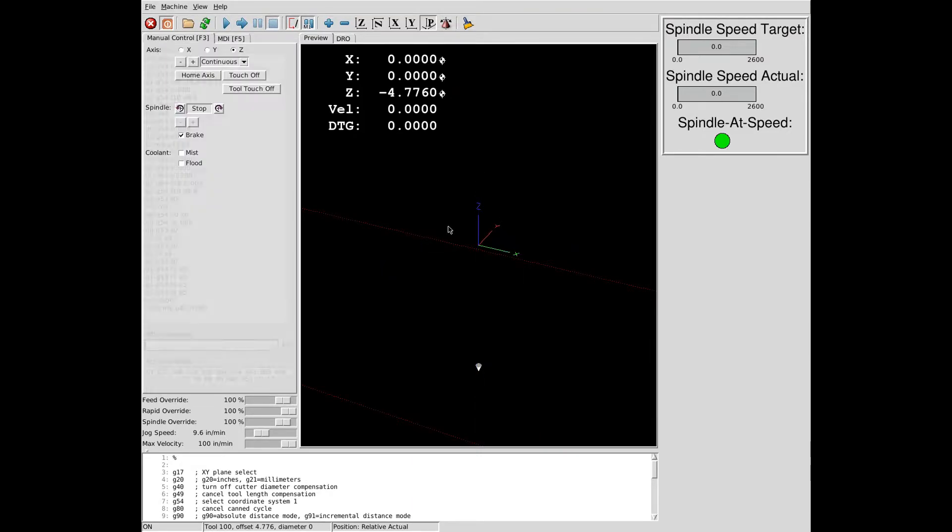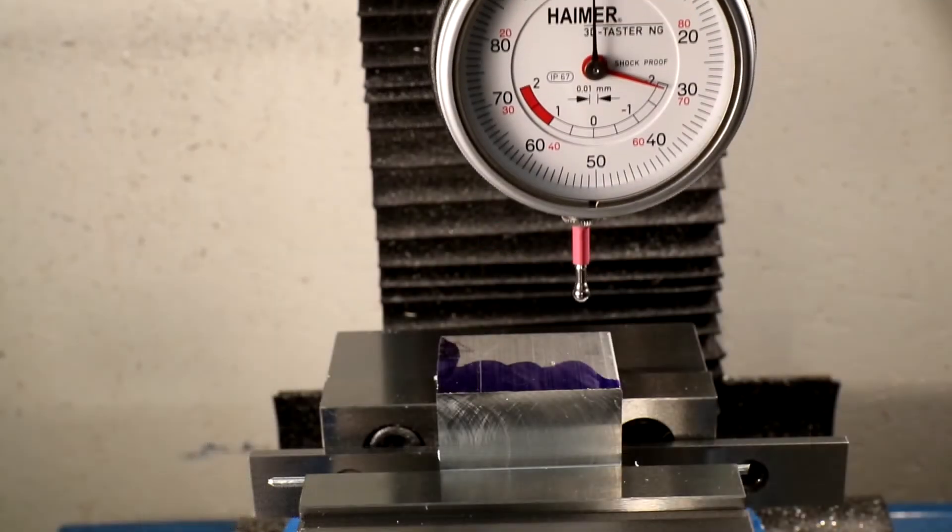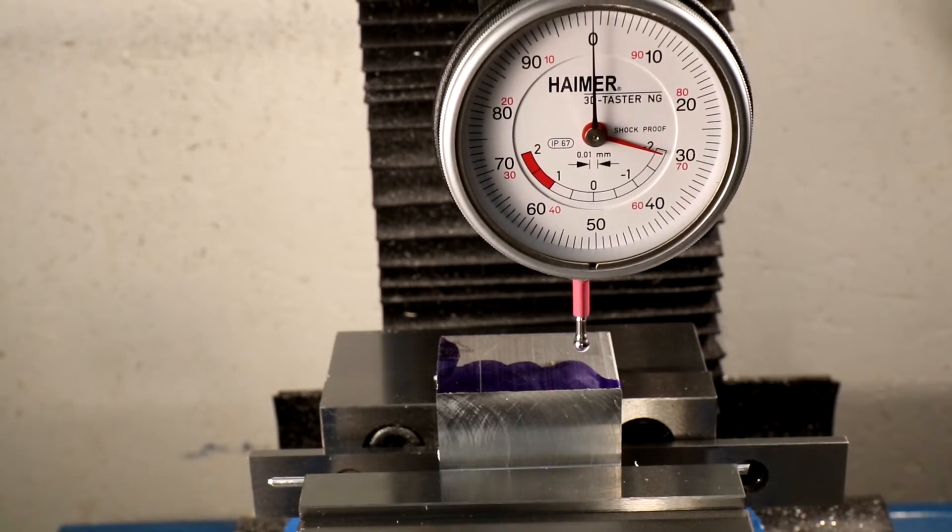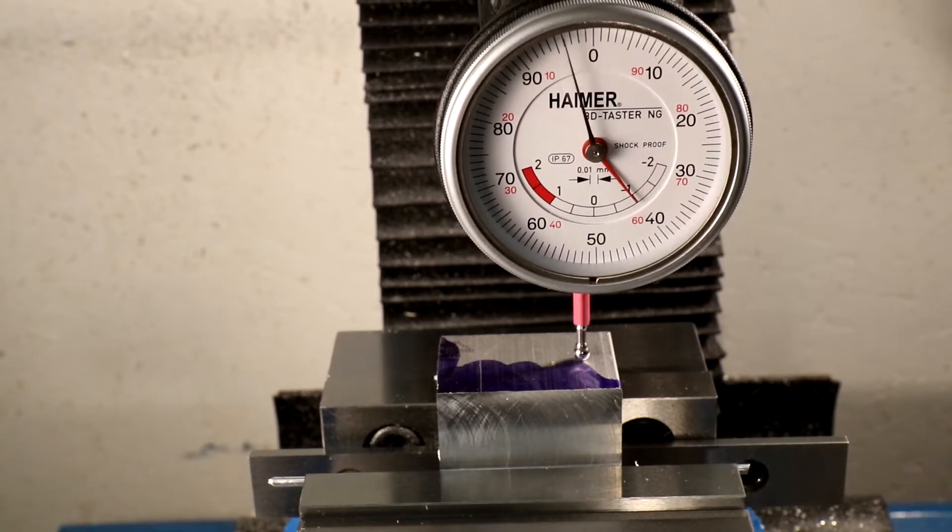After selecting our height probe and loading its length offset, we touch off on the stock height. The probe's length was measured with the plunger depressed to the probe's zero point.